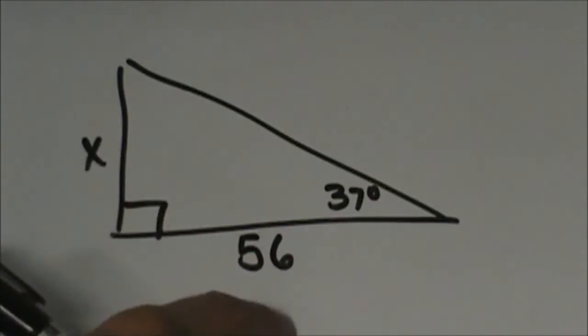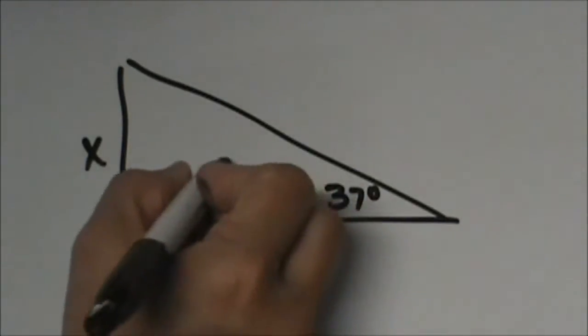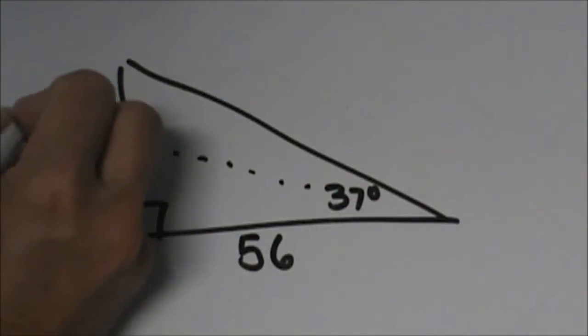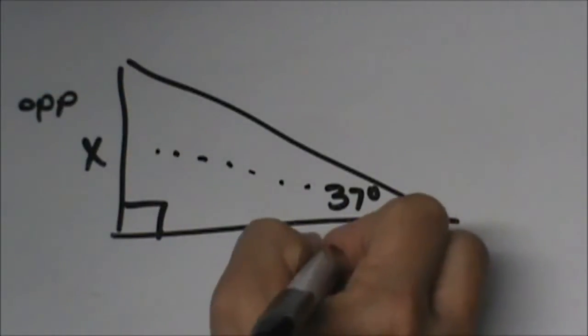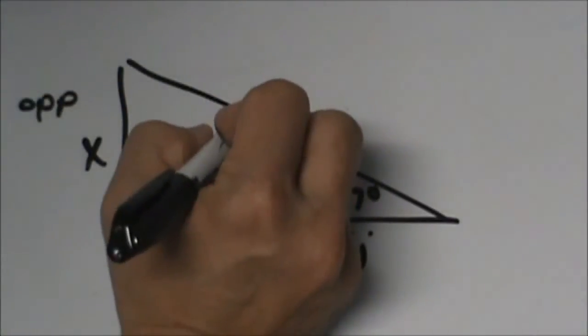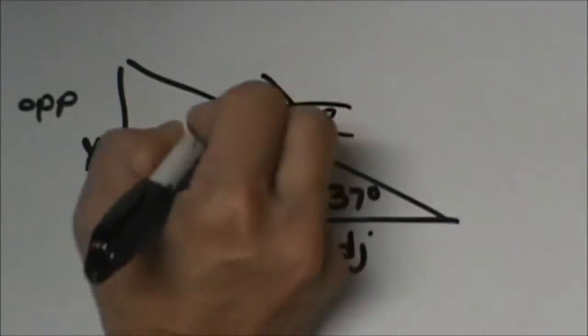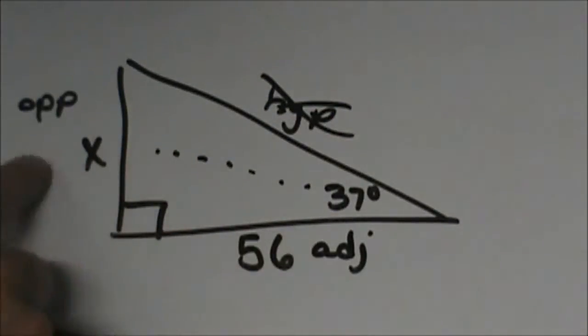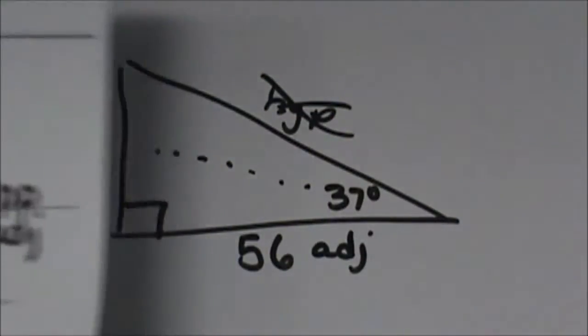Which two sides are we dealing with? I always like to label my opposite first, then my adjacent leg, and then my hypotenuse. So I am not using hypotenuse on this one, I am using opposite adjacent. Which one is opposite adjacent? Tangent.